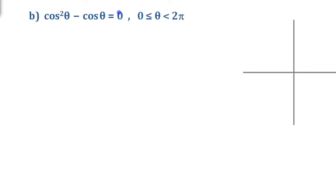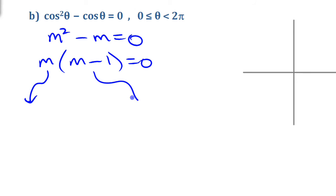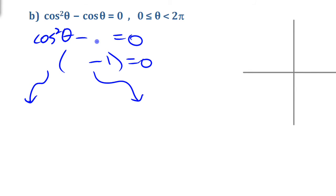For the second example, we're solving cosine squared theta minus cos theta equals 0. This is different from the other one — it's like m squared minus m equals 0. That's not a trinomial; there are only two terms and there is a common factor. You factor it as m times (m minus 1) equals 0. In our case, we factor out cos theta to get cos theta times (cos theta minus 1) equals 0.